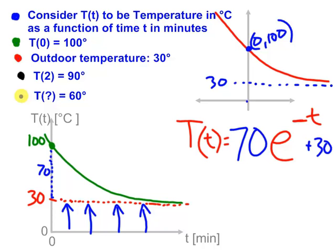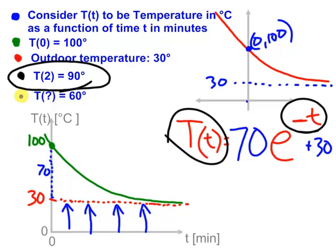Let's go ahead and address the one bullet point we haven't looked at yet. This one. T of 2 equals 90 degrees. I'm going to make the claim that we need a horizontal stretch or shrink to address that. It is very unlikely that if I plug in 2, I'm just going to magically get 90 as an output.